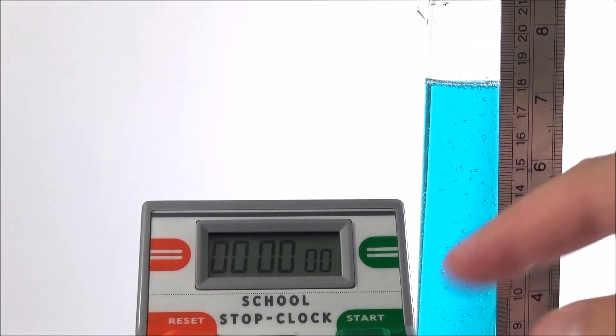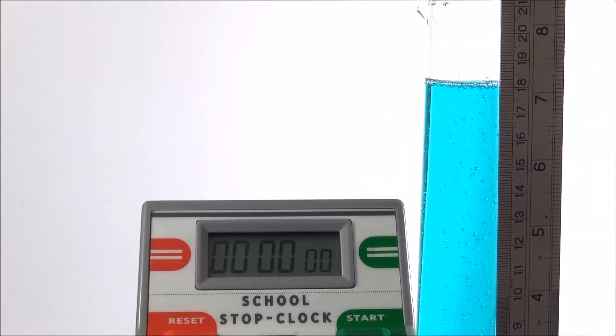I've got a stopwatch here which I can set running, and you don't need to start it on zero - what we're looking at is effectively the elapsed time. Now I dropped the ball bearing into this liquid, so how do I get it out? There's no point trying to tip up all the liquid, but what you can use is a small magnet.